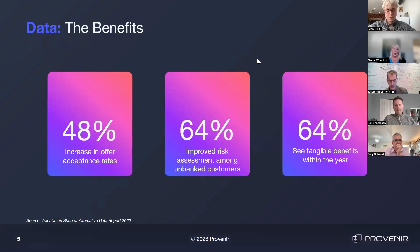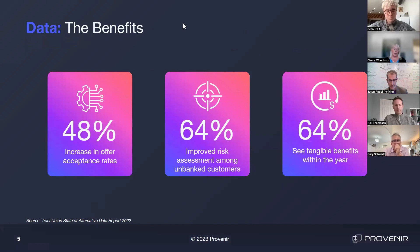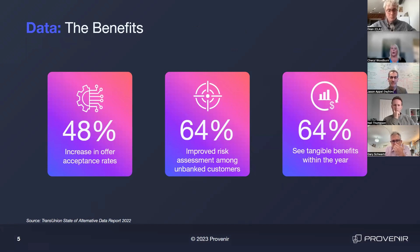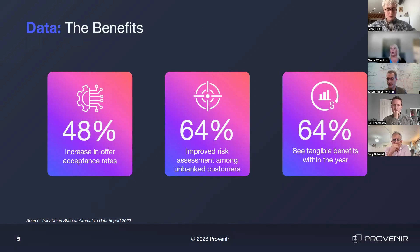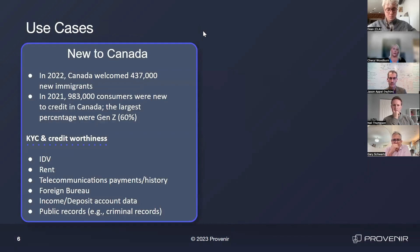The question is: why would you do it? Because we know it's not that easy to just say you're going to take some new data. When we look at this, according to TransUnion's 2022 report on alternative data, people who have adopted this have seen almost a 50% increase in offer acceptance rates. Imagine what that can do to your bottom line. It leads to 64% improved risk assessment — making sure we're lending to the right people the right amount at the right time. And being able to get an ROI in under a year is another amazing opportunity.